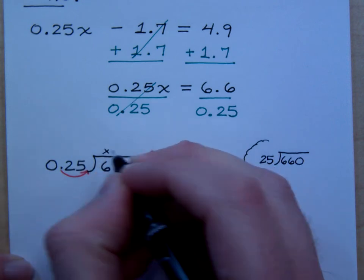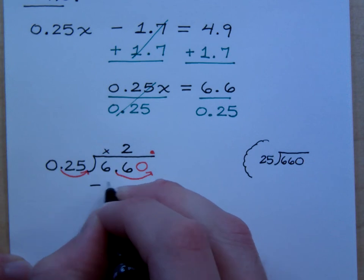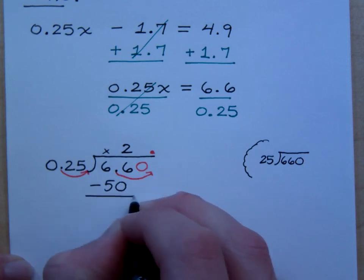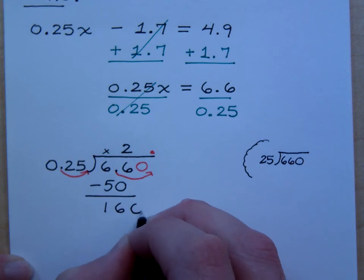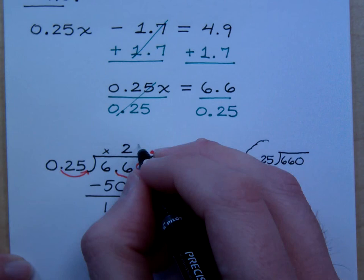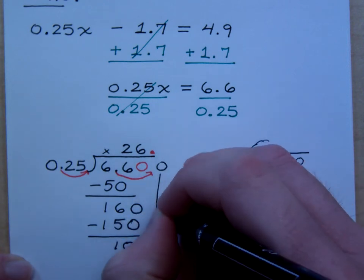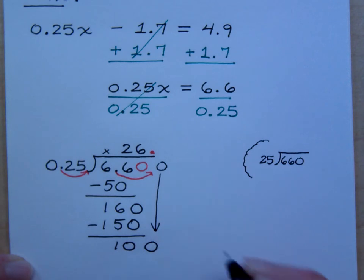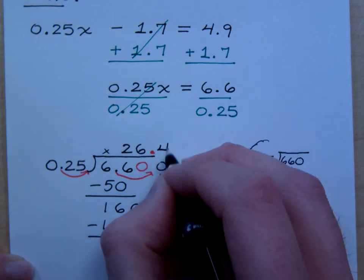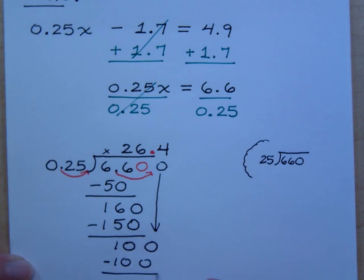25 doesn't go into 6, but it goes into 66 how many times? So that's 50. How many times does it go into 160? Six times. If you have a difficult time thinking about this, think about money. How many quarters could you have to make up 160? Six quarters and then you have to have a dime. So that's 150. Have a remainder of 10, but I need to add a 0 here. So then 25 goes into 100 four times.